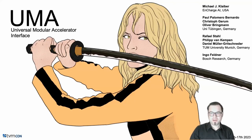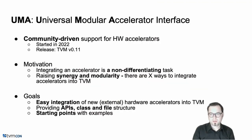As you can see from the number of contributors here on the first title slide, UMA is a community project — from NCharge AI, University of Tübingen, University of Munich, and Bosch Research — and it's also maintained as part of the community. The initial steps towards UMA started a little bit more than a year ago, made it into main in August, and it's now part of TVM release 0.11.